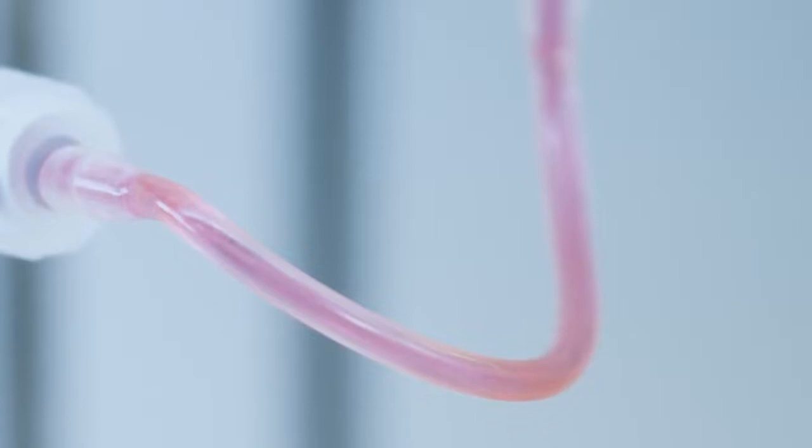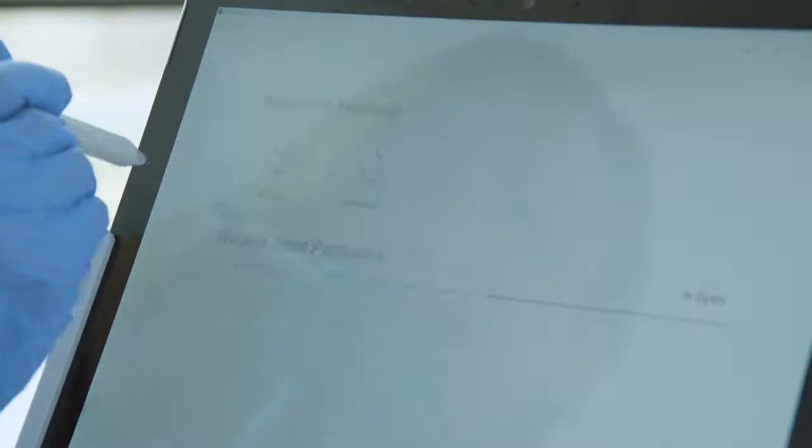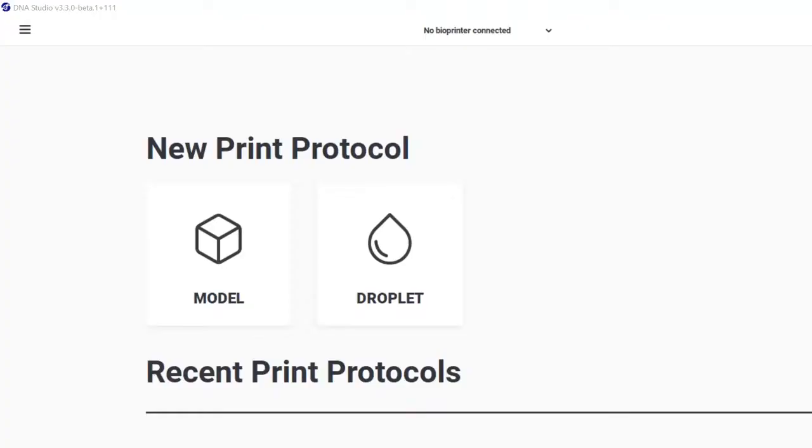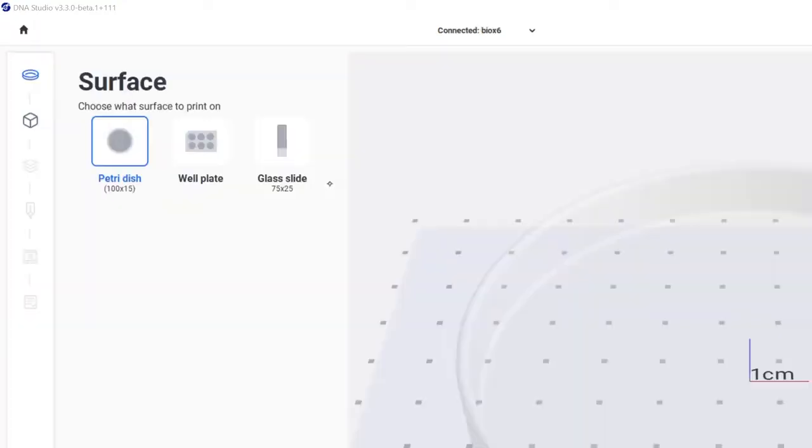Okay, let's go through the bioprinting settings. Open the DNA studio. From here the software gets connected to the device. You can select the specific plate that you are going to print. So I'm selecting the petri dish.